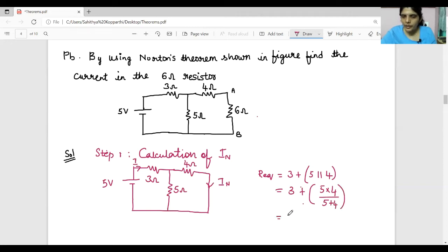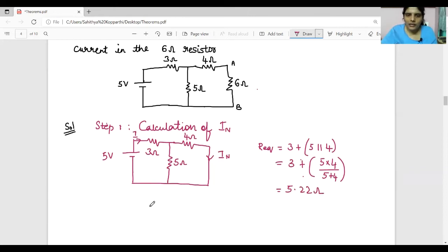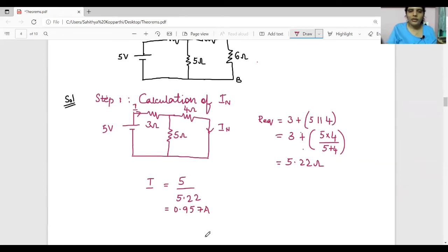Now I is V by R equivalent. Here V is 5 volts, R equivalent is 5.22 ohm. 5 divided by 5.22 ohm, it is 0.957 ampere. Now apply current division rule.